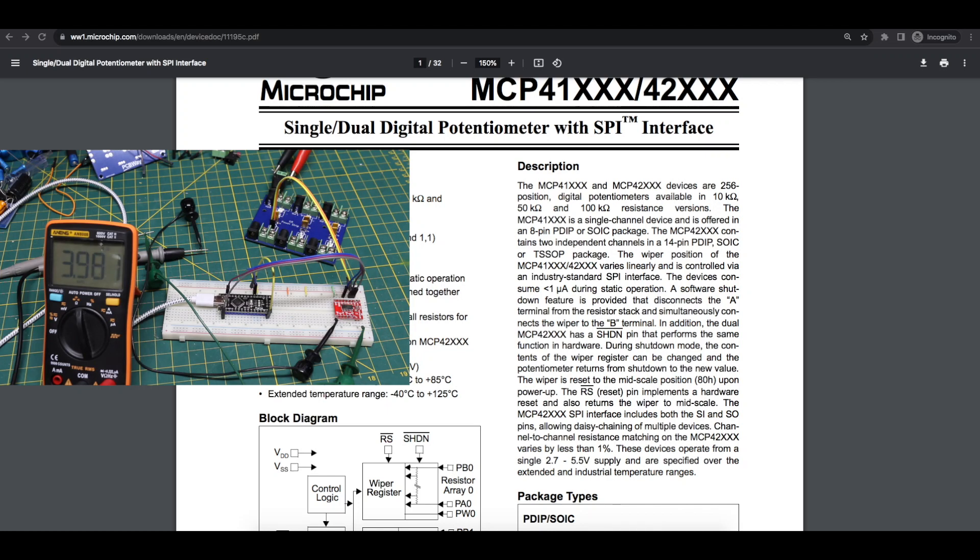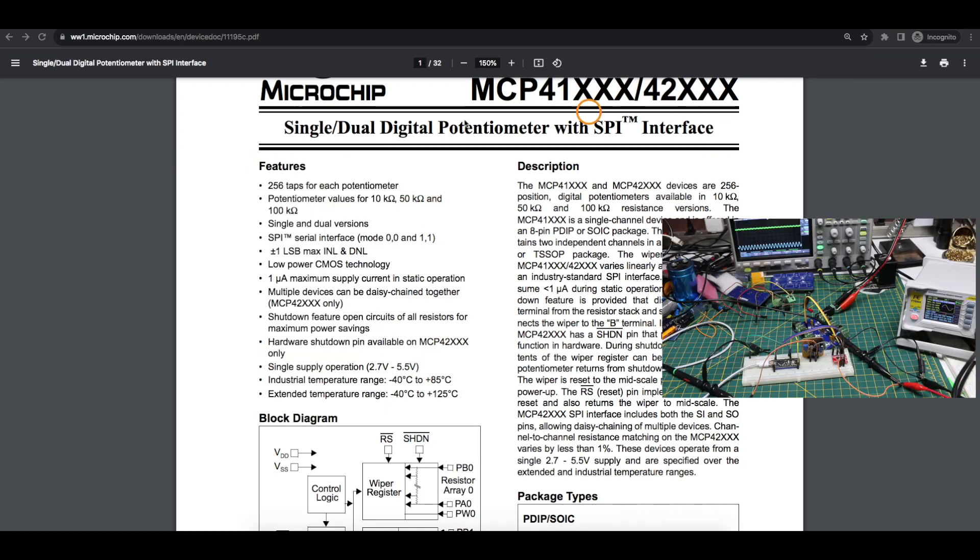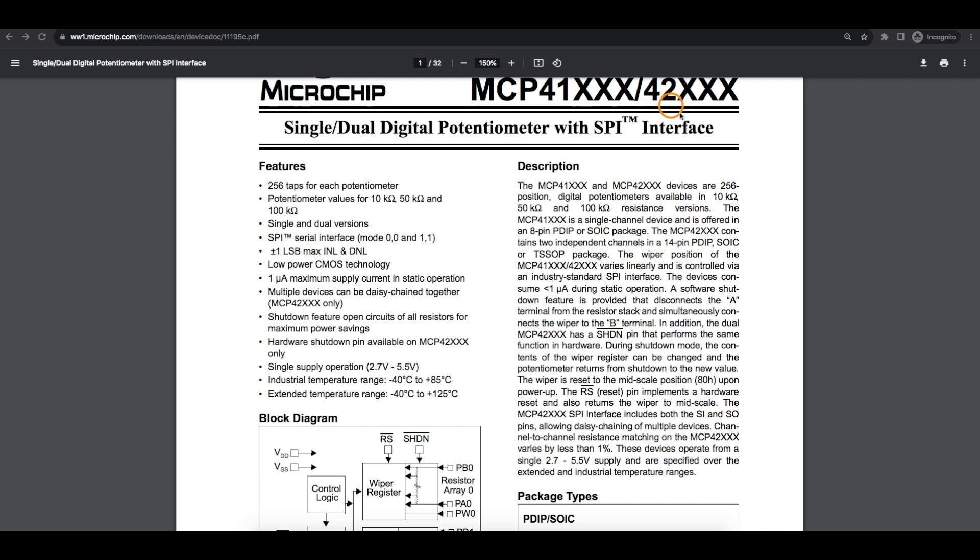Here's a few example ways to use digital potentiometers. I'm going to be working with these Microchip MCP41 or 42 series parts. I have the 42, which is a dual potentiometer. The 41 is a single, and these are controlled with an SPI interface. So it's standard, it's easy to use with an Arduino.